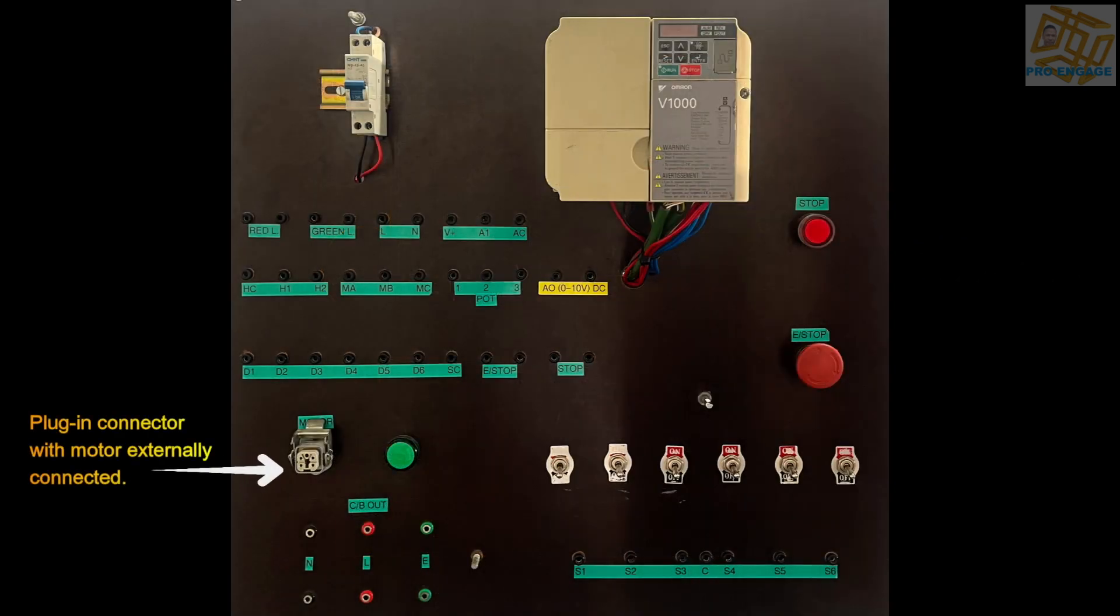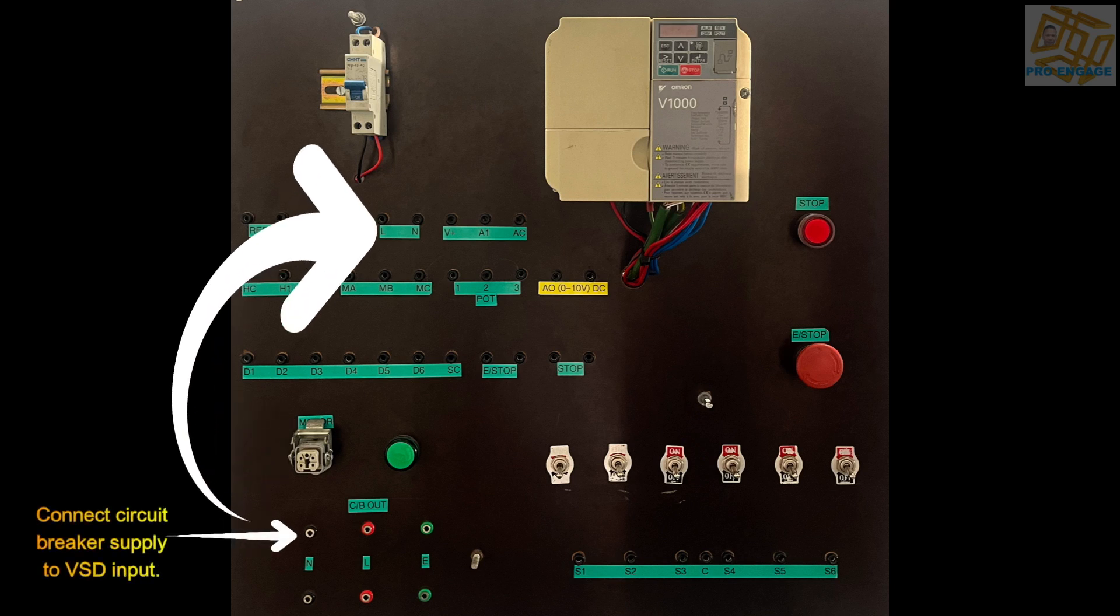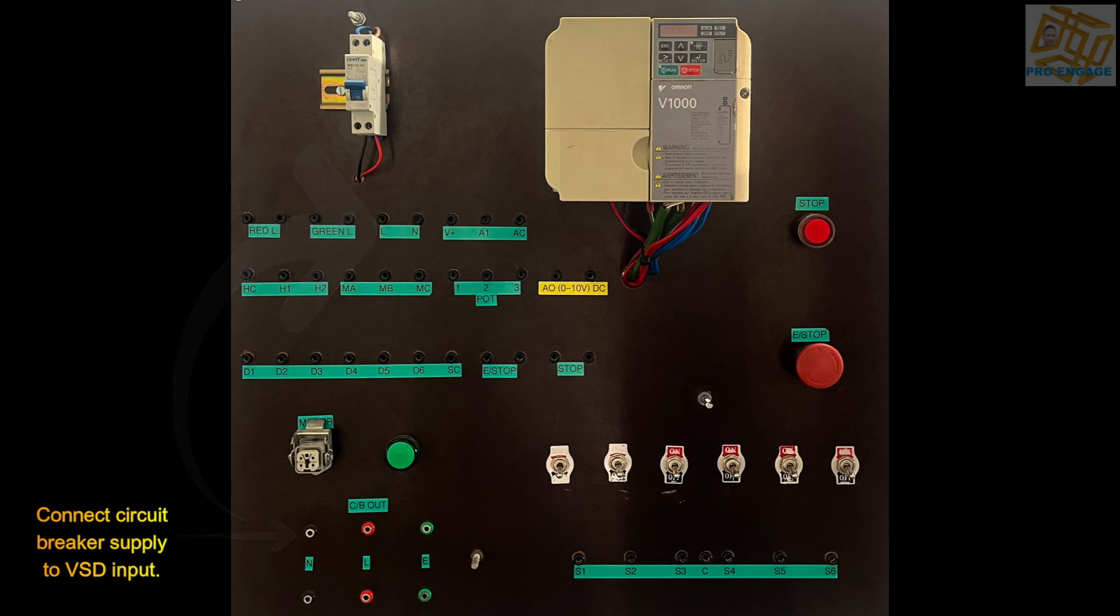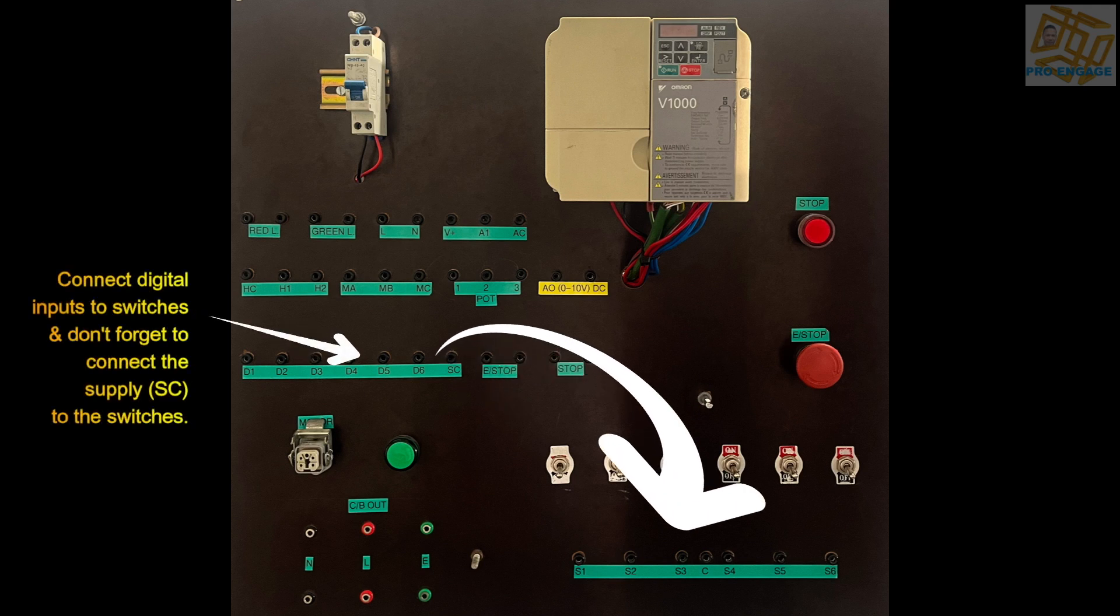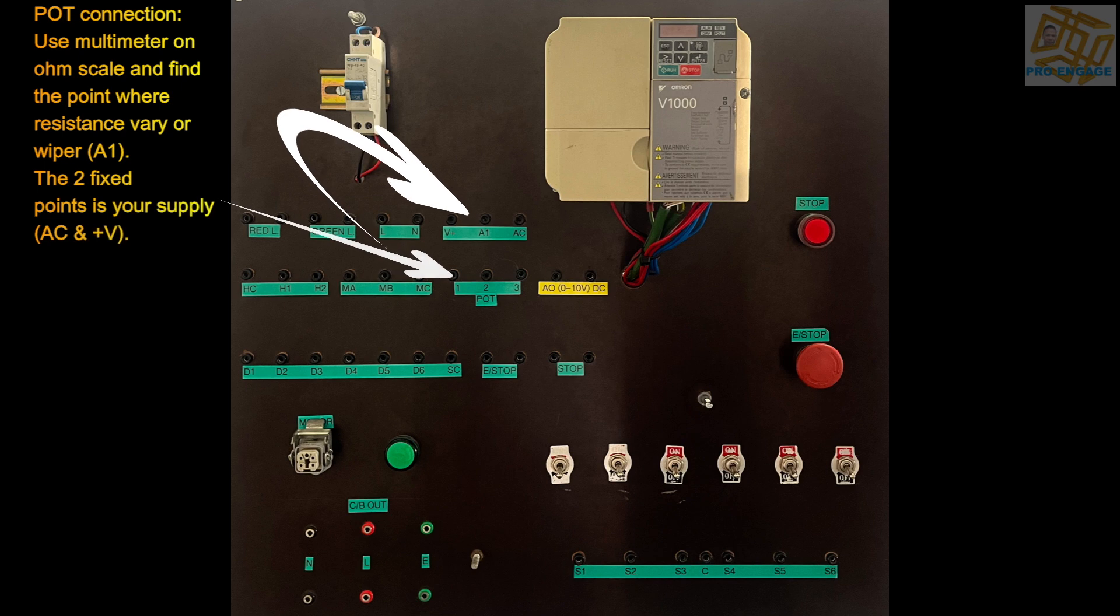This is an example of the panel that we will use. That's your plug-in connector with the motor externally connected. Then we look at the circuit breaker which is right above, but its connecting points at the bottom can be run out on the panel. The VSD points are live and neutral. Connect the digital input switches which are labeled.